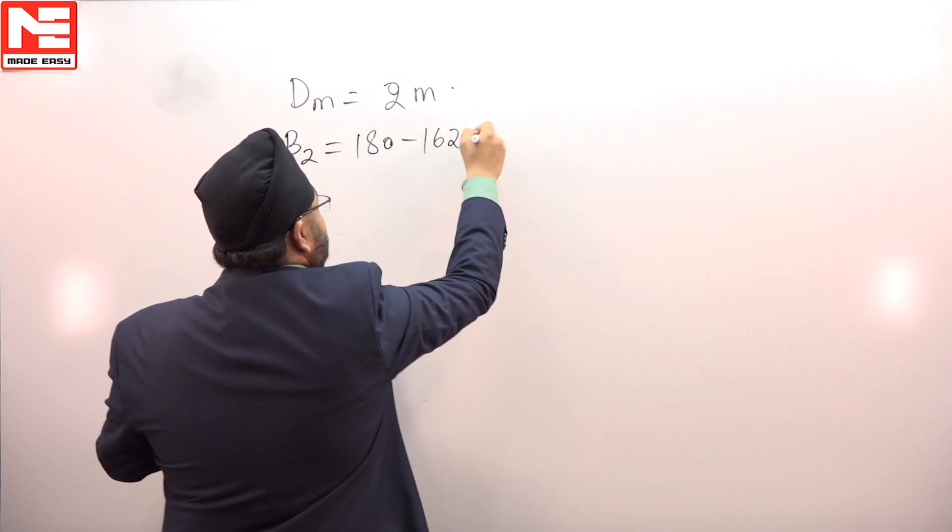In a Pelton wheel, the diameter of wheel is 2 meters and the angle of deflection is 162 degrees. So beta 2 will be 180 degrees minus 162, which comes out to be 18 degrees.